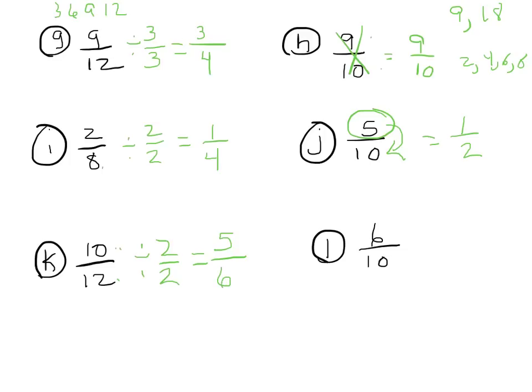Let's take a look at six-tenths. Looks like two is going to be it again — it's an even number. With six, it definitely can't be three because three is not going to go into ten. So six divided by two is three, and ten divided by two is five. That gives three-fifths. Practice with this, take your time, and make it make sense.